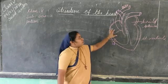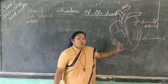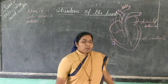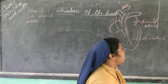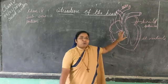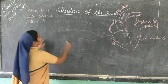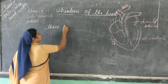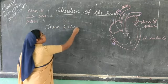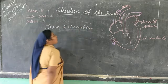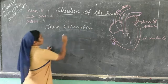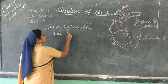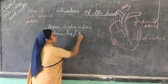The heart has four chambers — four areas that are filled with blood. These four areas are filled with blood and divided into two chambers.